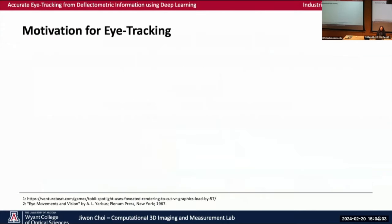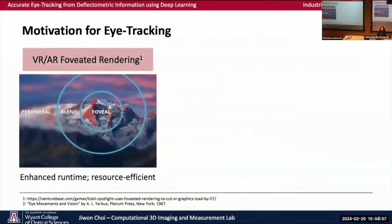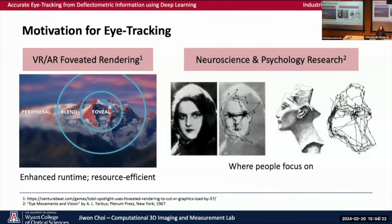Eye tracking is an important feature in many areas of study. Eye tracking is used in commercial AR, VR, and MR devices for foveated rendering. By rendering only a certain field of view, a power and resource efficient solution can be achieved. It is also important in neuroscience research, since eye tracking can determine where people focus on.